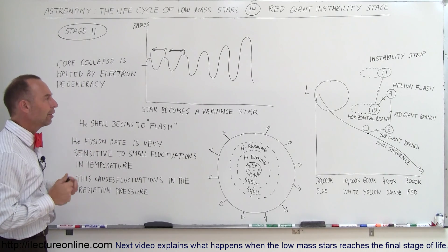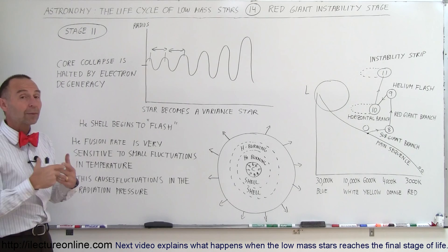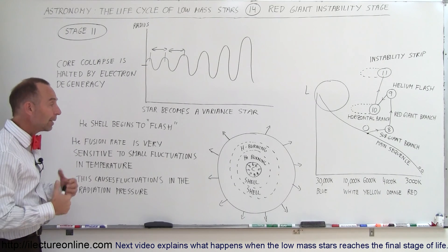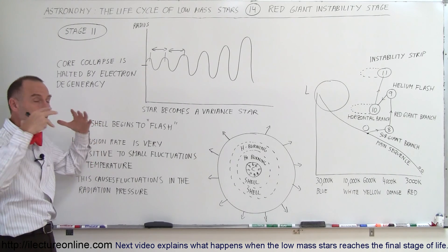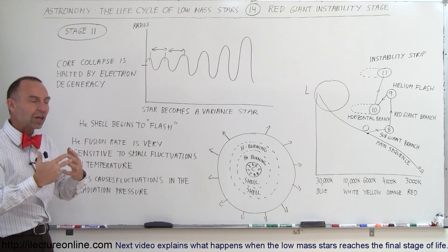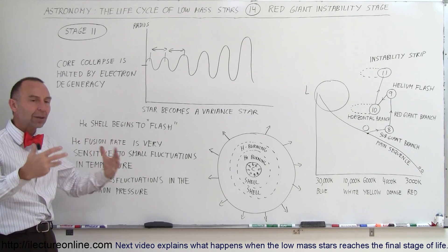That will be for a different video when we talk about variable stars in general. But anyway, stars like this, the big red giant stars at the end stage of their red giant stage, will become very unstable.